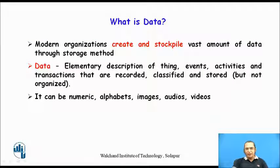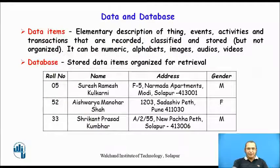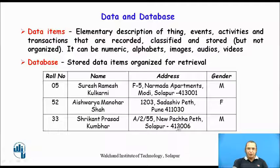We have already seen the definition of data. Data is an elementary description of things, events, activities, and transactions that are recorded, classified, and stored, but not necessarily in an organized way. A database is formed when these data atoms are stored in an organized way. For example, here I am showing how data related to a class is being stored in a table, making it easy to retrieve certain information.